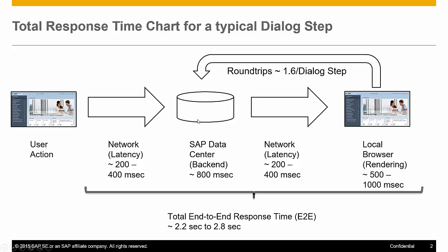The result is packaged up and sent back to the front end of the user — we have the network latency a second time — and it is sent to the local browser, be it Chrome, Edge, or Internet Explorer 11. The local browser has a rendering time that depends on the size of the front-end machine and whether you have installed add-ons in your browser; that can be anywhere between 500 and 1,000 milliseconds. From time to time, displaying certain information requires more than one round trip — we visualize something, make it actionable immediately, and then display additional data. Therefore, the average dialogue step comprises 1.6 round trips.